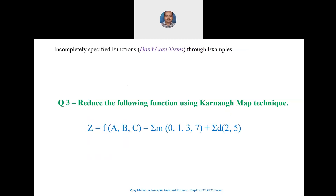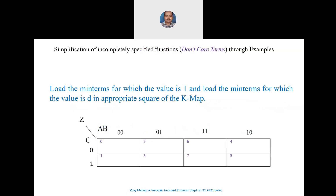Third example: Reduce the following function using Karnaugh map technique. Output variable z is a function of input variables a, b, and c, equal to Σm(0,1,3,7) + Σd(2,5). For minterms 0, 1, 3, and 7, z is 1; minterm 2 is don't care, and minterm 5 is don't care. Since it is a three-variable K-map, draw the three-variable K-map with variables a, b, and c, and put the values appropriately.